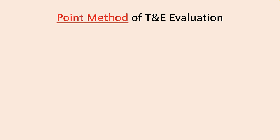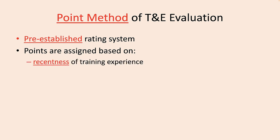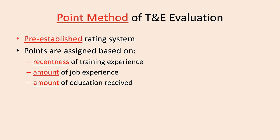With the point method of a T&E evaluation, the evaluator uses a predetermined scoring system to assign numbers or scores or weights to the applicant's responses. This is a much better manner of using T&E information than the holistic judgment method. How you set the predetermined scores is important and it varies from firm to firm and sometimes within firms from job to job. Typically, you assign points based upon how recent the training was, the amount of experience they have, and the amount of education they have. An applicant with the same experience completed just yesterday should probably earn a higher score than one whose experience was 20 years ago.